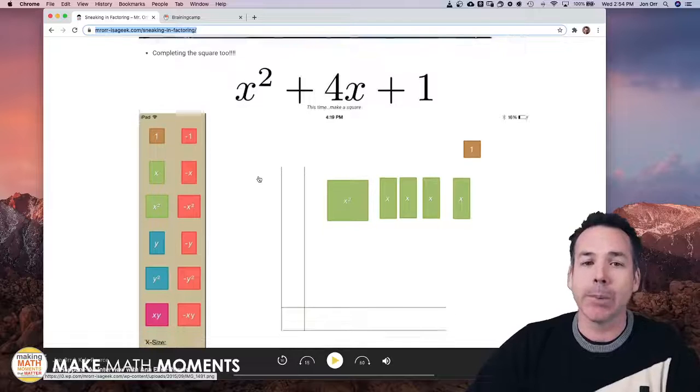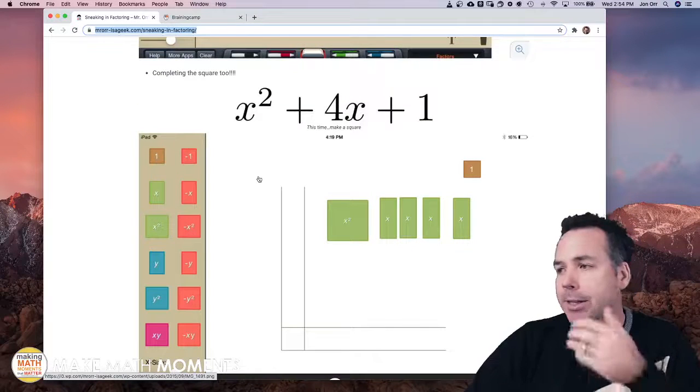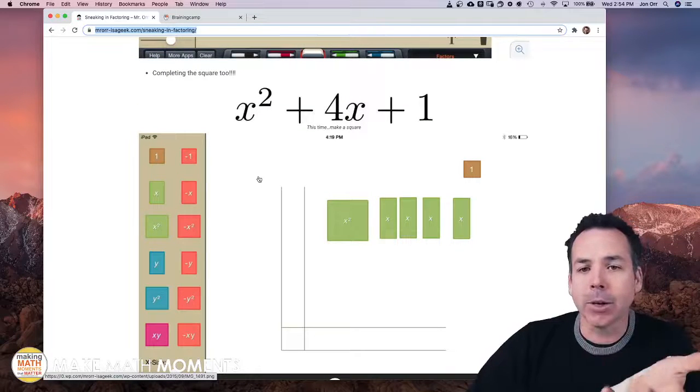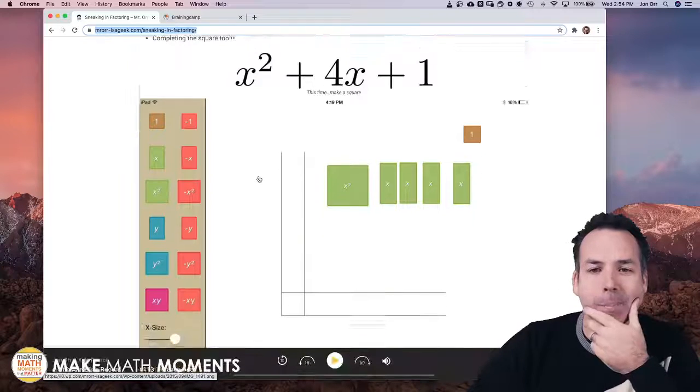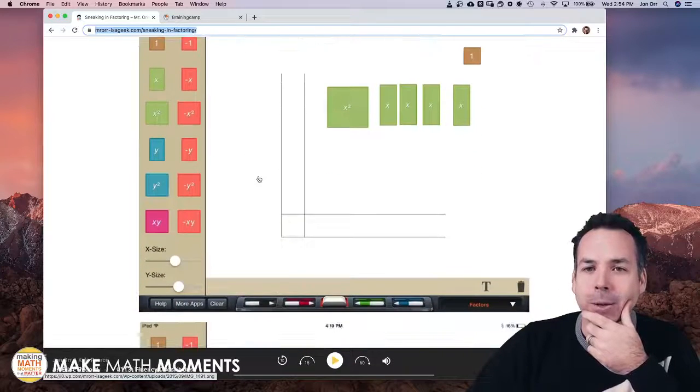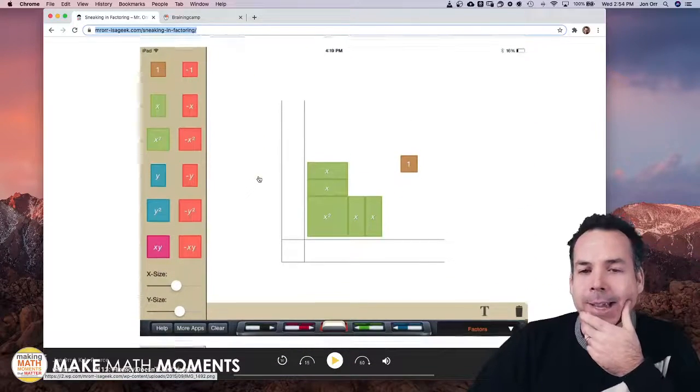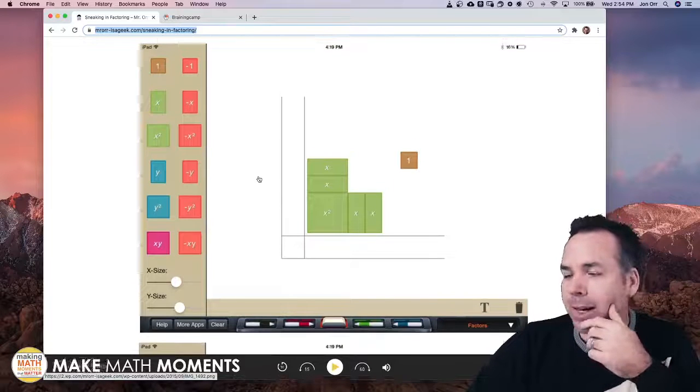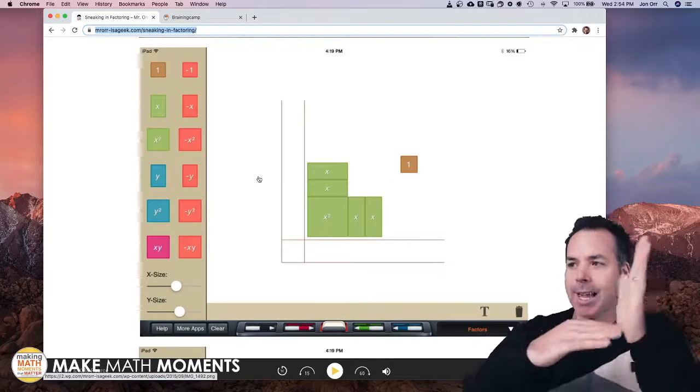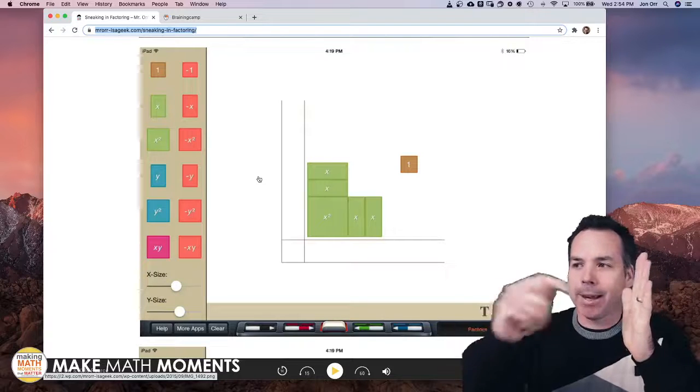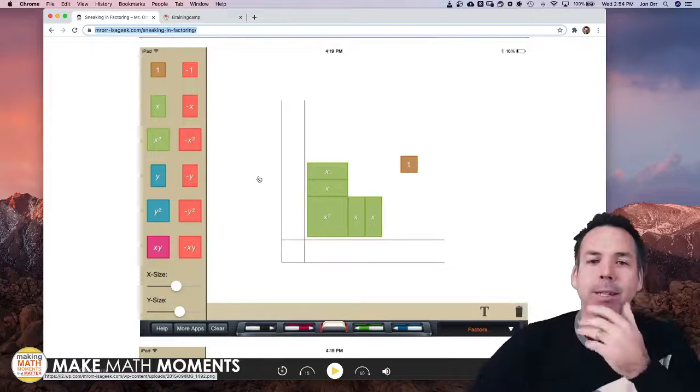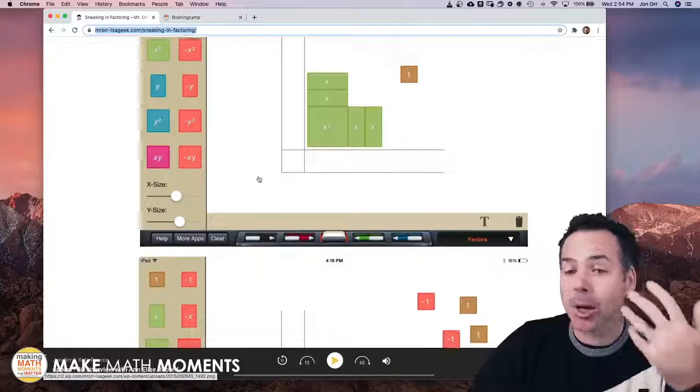So this is the way I start with factoring is just building rectangles. Here's an example here on this blog post where I said hey here's build me a square and kids are like well I can't build a square with exactly those tiles. Then you say wait a minute yes I can build a square, I can almost build a square because it's got to be symmetric but I actually need a couple more tiles to fit in there and that's our completing the square.